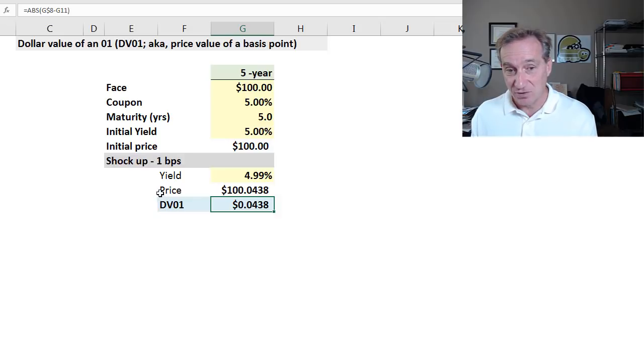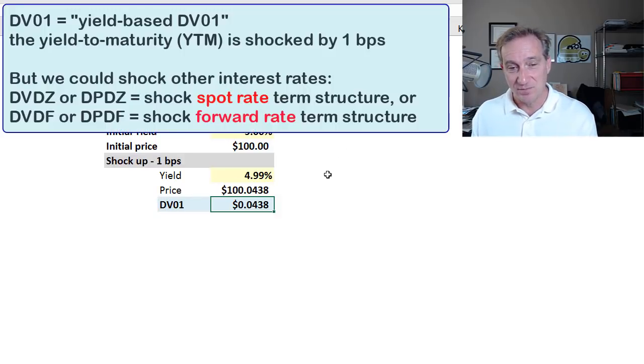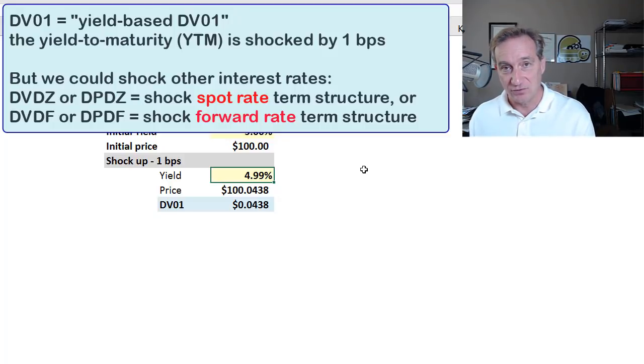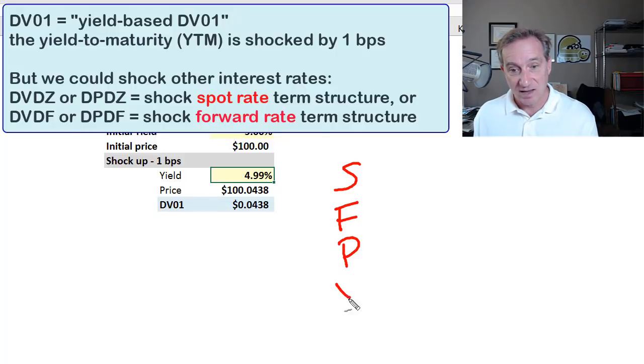Yield drops by one basis point, price goes up slightly. The difference is the dollar value of 01 or price value of a basis point. So I think price value basis point is pretty descriptive. We have an initial bond. If the yield were to drop by one basis point, we would gain 4.4 cents. As I mentioned, technically, it's a drop in the yield. And I also would mention that we're using the yield here.